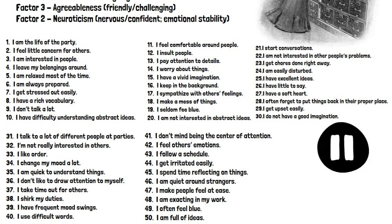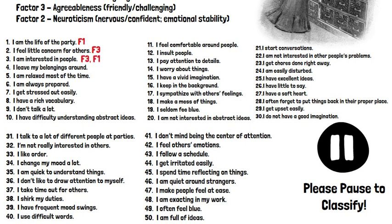For number one, 'I am the life of the party' — I would classify that as Factor 1, which is extroversion/introversion. Number two, 'I feel a little concerned for others' — I would place that in Factor 3, which is agreeableness, how friendly we are in an interaction. If we have an interest in people, I would assume we would be more friendly.